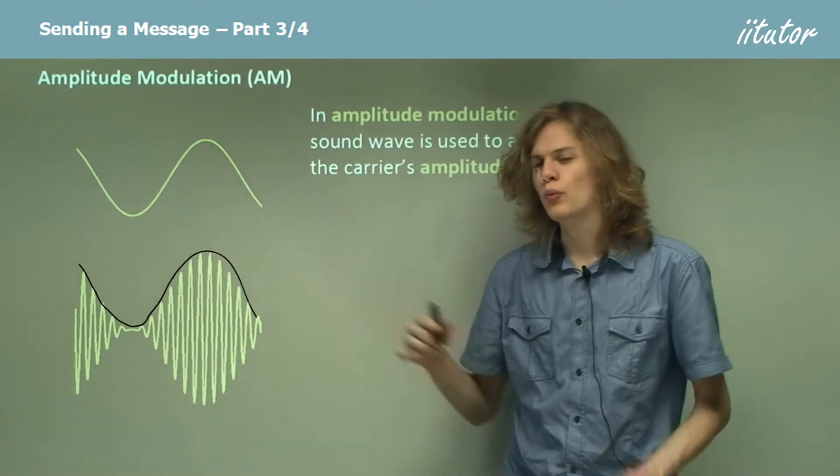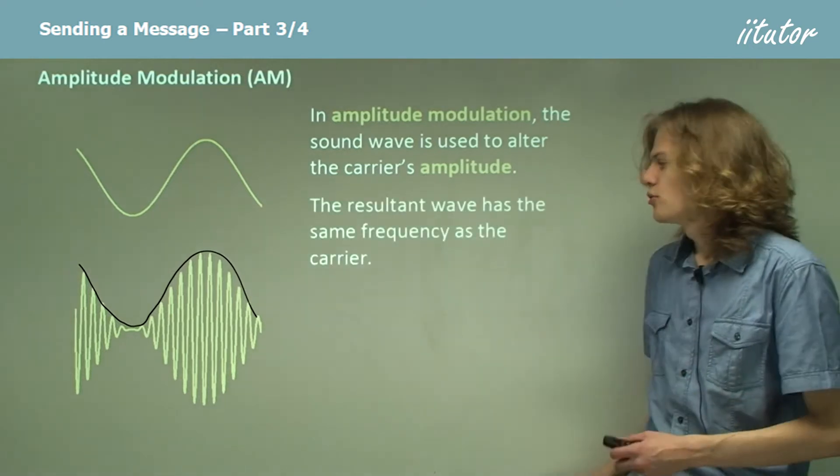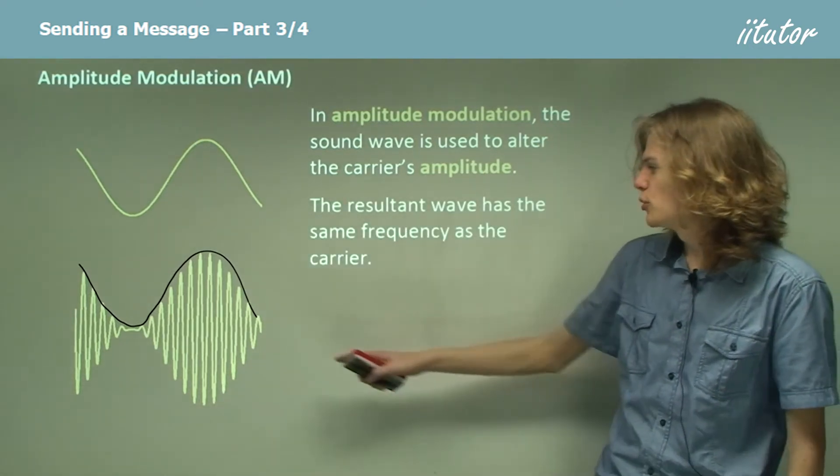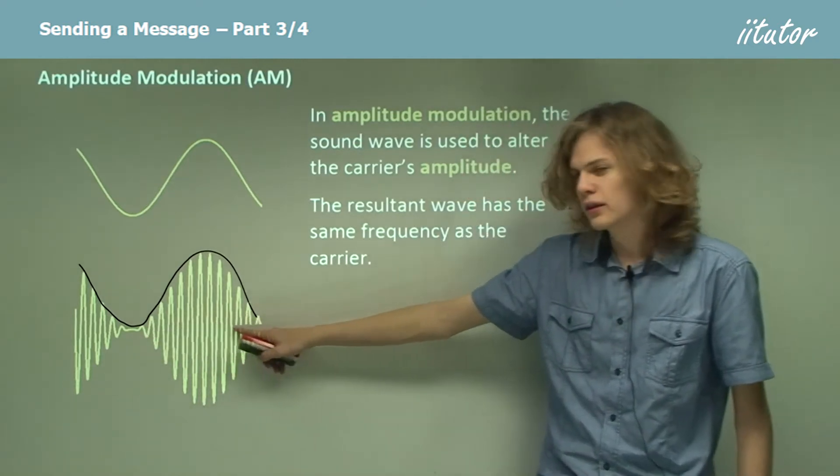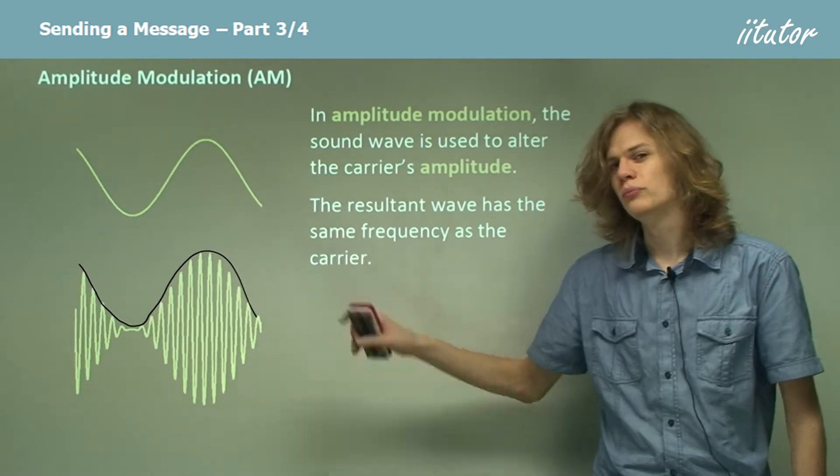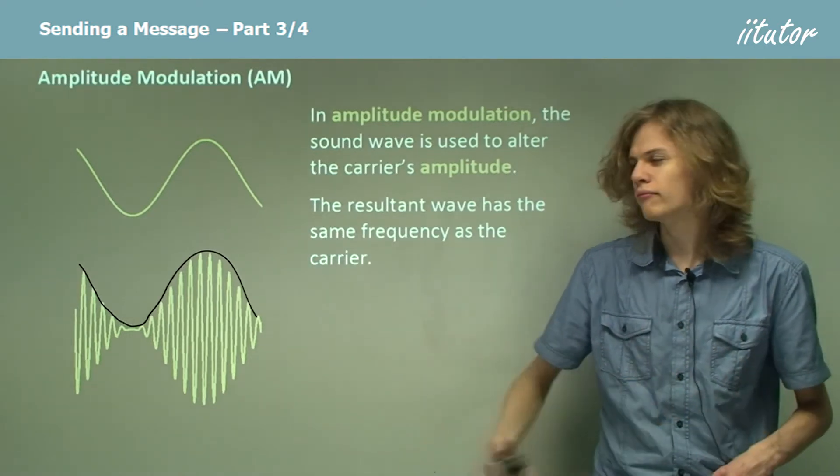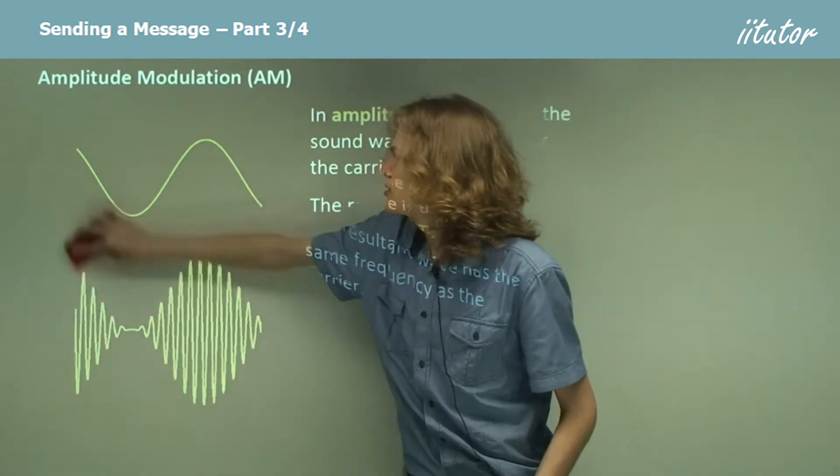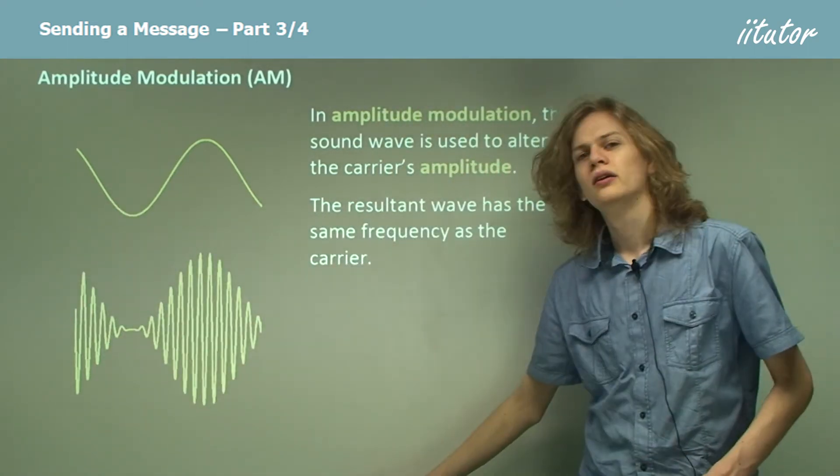The resultant wave will have the same frequency as the carrier, because if we look at the frequency of this bottom wave we can see that the pulses are still coming very very often, just as often as the carrier wave. So that means that the frequency of this wave doesn't change.